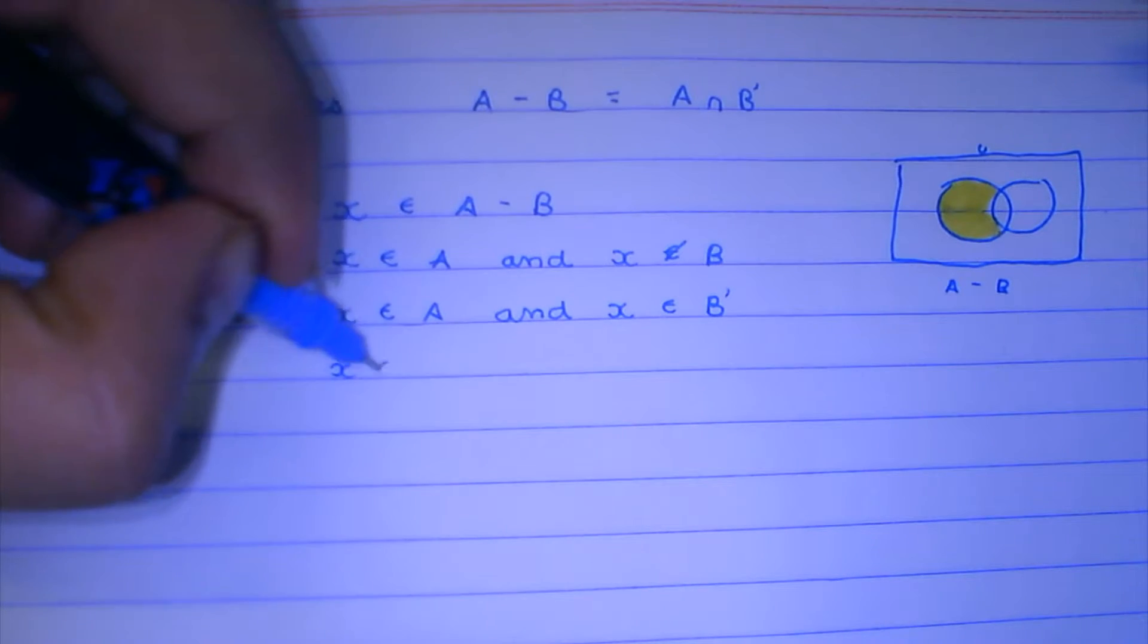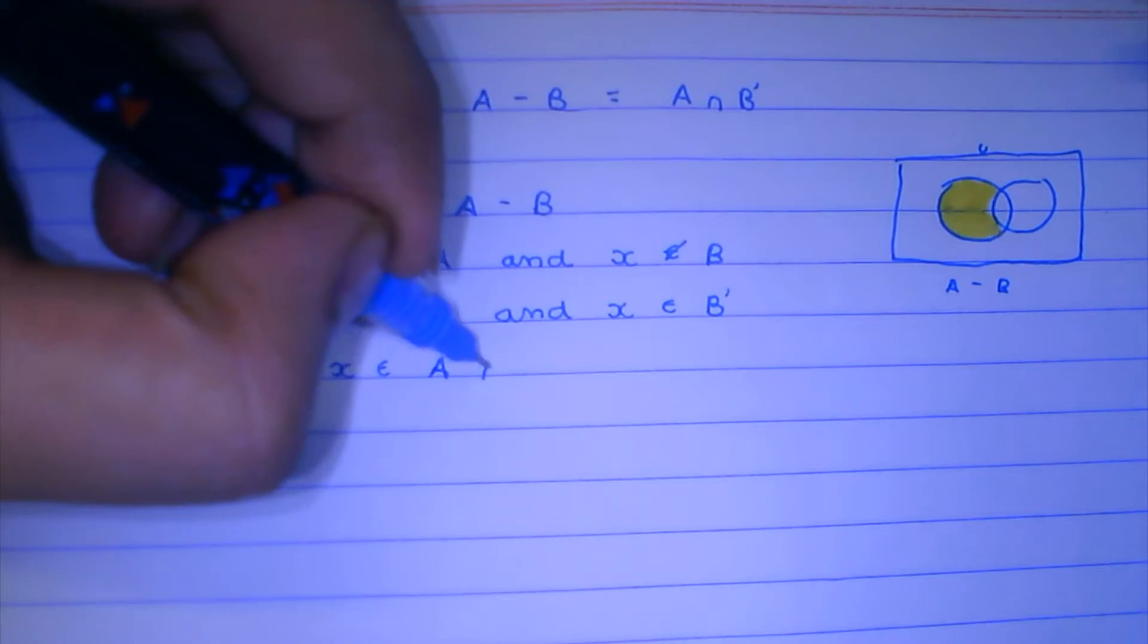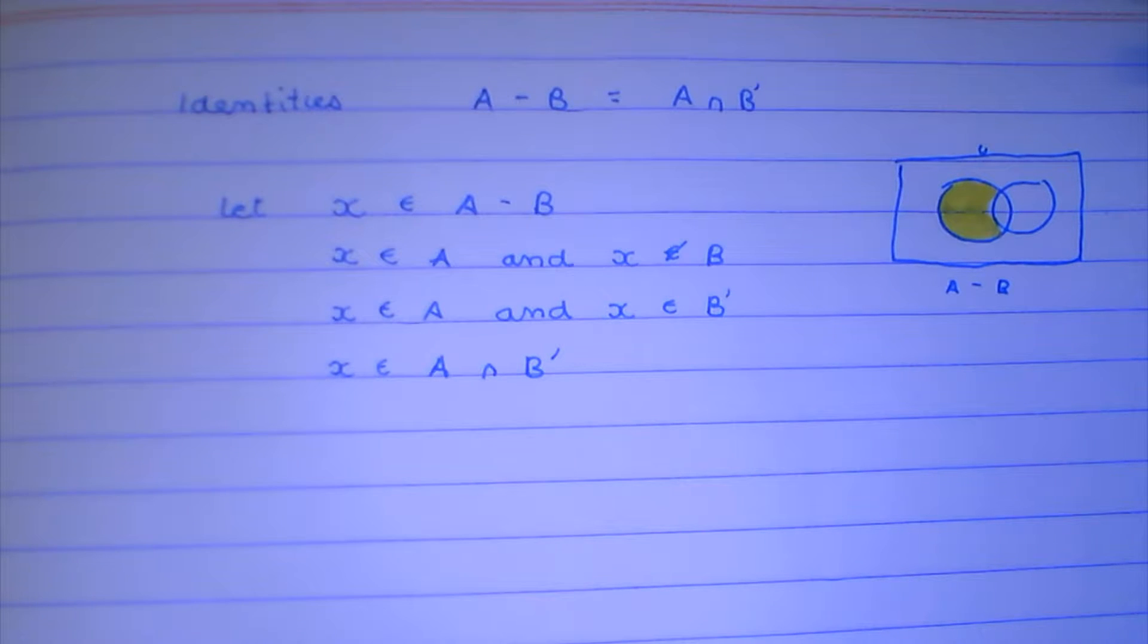So X belongs to A and X belongs to B complement, which means that X belongs to A intersection B complement. And that was pretty straightforward and easy.